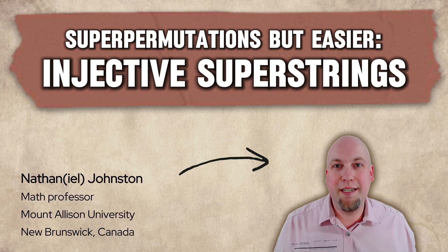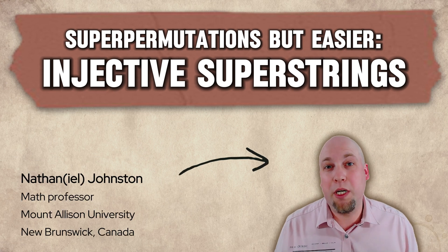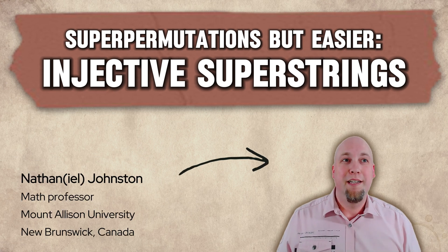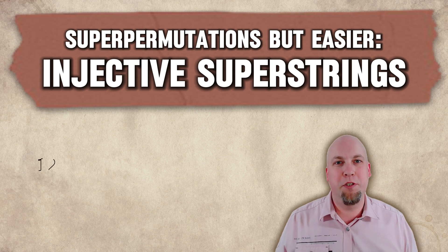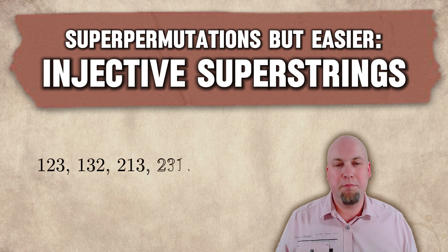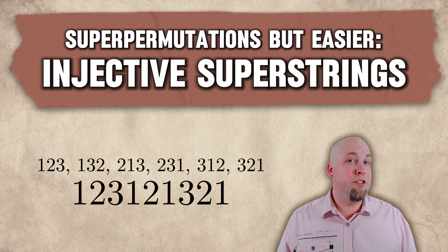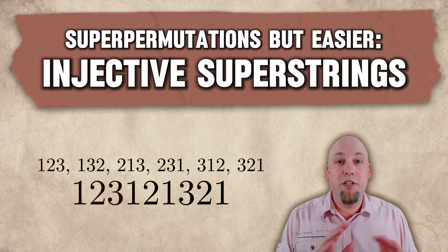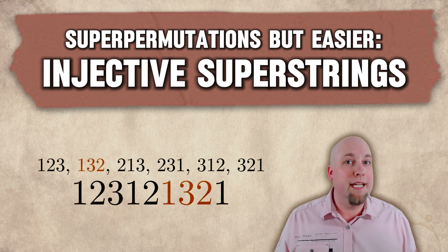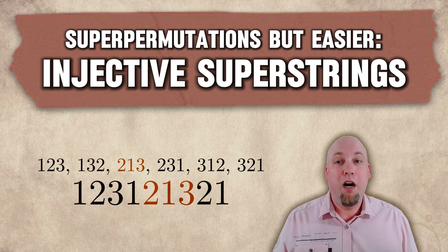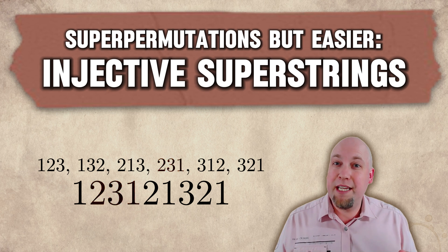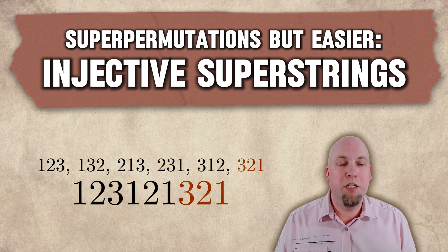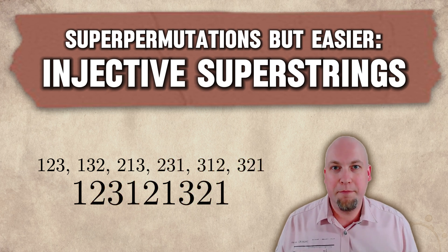Hey folks, my name is Nathan Johnston, and in this video I want to talk to you about super permutations. I want to talk about a problem that's a little bit easier than the super permutation problem. The super permutation problem is currently unsolved — we don't know what the length of the shortest super permutation is on six or more symbols. I want to talk about a slight variation of this problem that we do know how to solve, no matter how many symbols we're talking about.